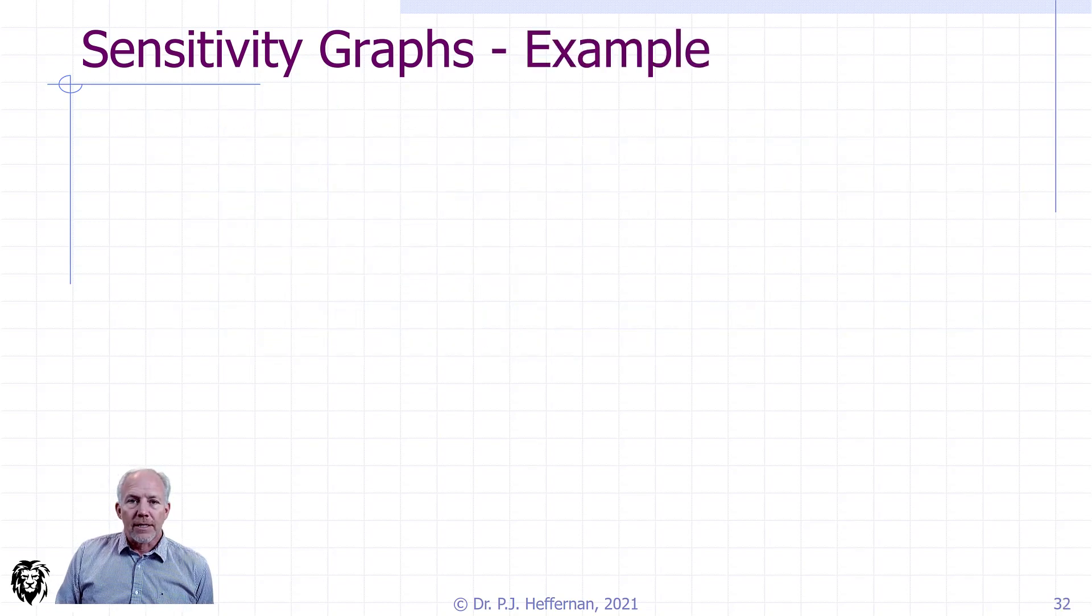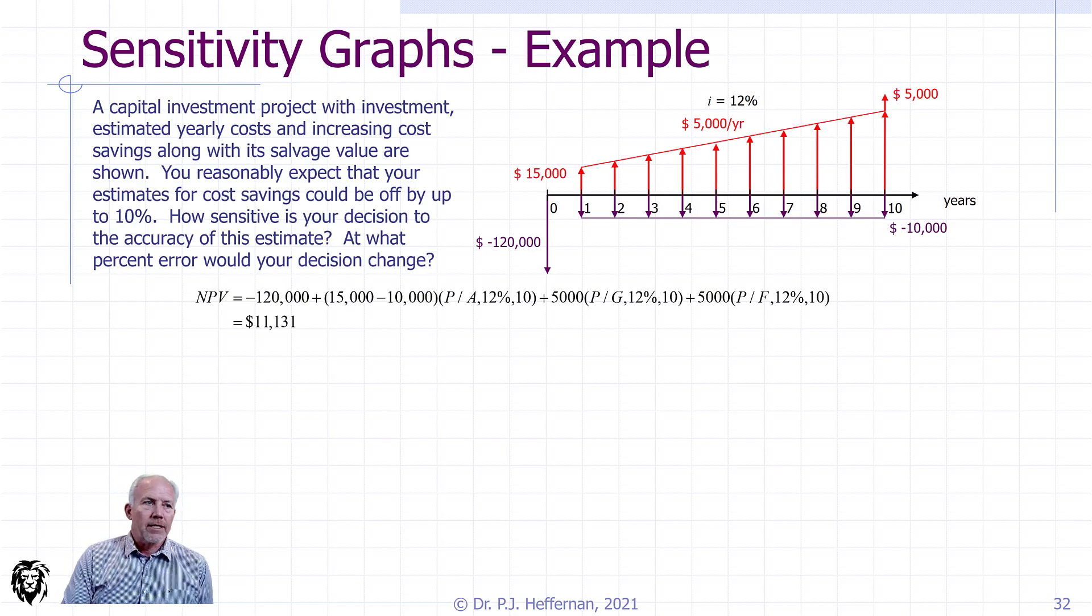So the easiest way to see this is to do a quick example. In this case, we have a cash flow timeline laid out. It's basically a capital investment project outlay of $120,000 in year zero. It's going to see a series of increasing cost savings coming back to us over the 10 years of the project, and finally a salvage value at the end of $5,000.